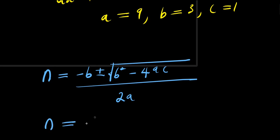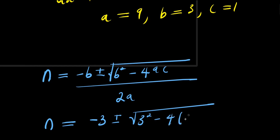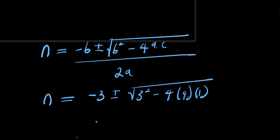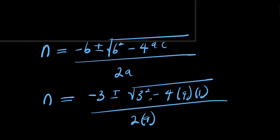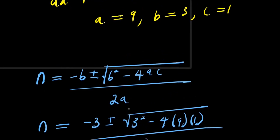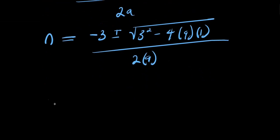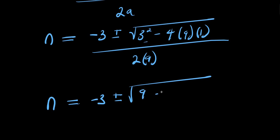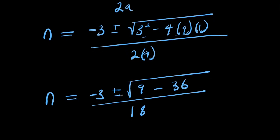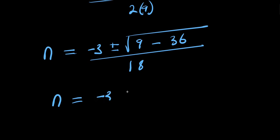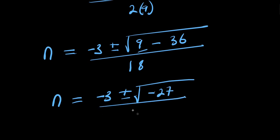From here we have n equals negative 3 plus or minus square root of (3 squared minus 4 times 9 times 1) divided by 2 times 9. That is: negative 3 plus or minus square root of (9 minus 36) divided by 18, which gives negative 3 plus or minus square root of negative 27 over 18.